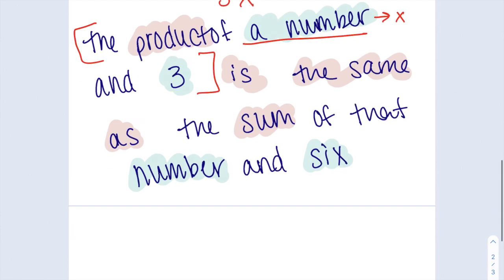Next it says is the same as. That's an equal sign. I don't need to think any more about that. It just means that I have an equal sign in between whatever this next statement is going to be. The sum of that number and 6.